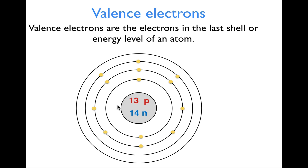Now, valence electrons. We know what an electron is — they are surrounding the nucleus and they have different energy levels. If we look at a Bohr model, a valence electron is still an electron — it's just the electrons that are in the outermost shell, in the highest energy level.